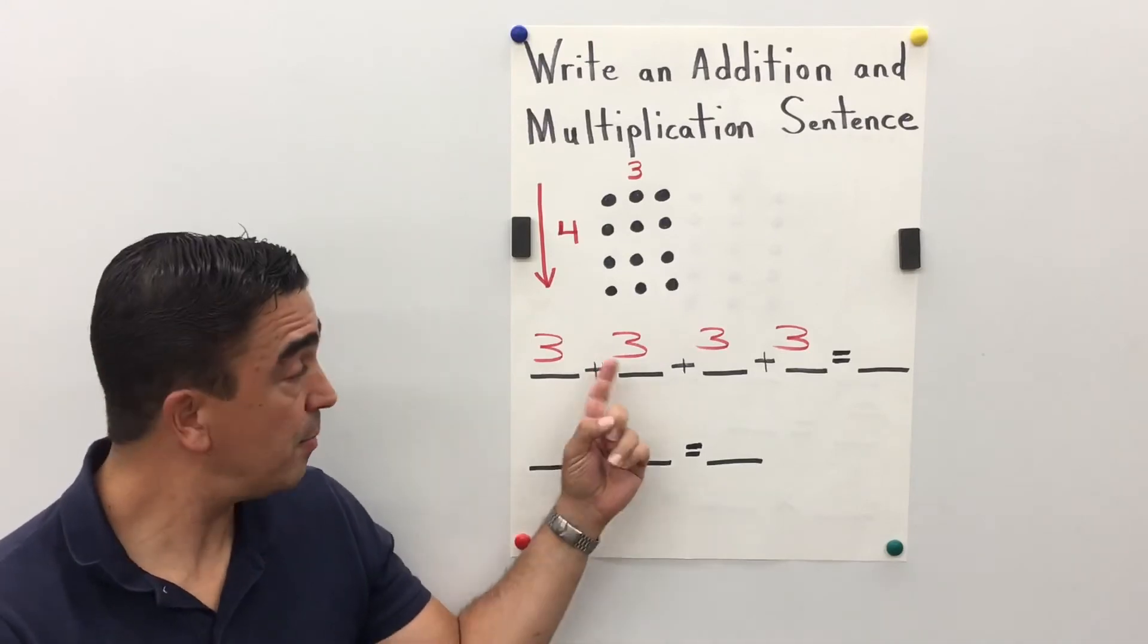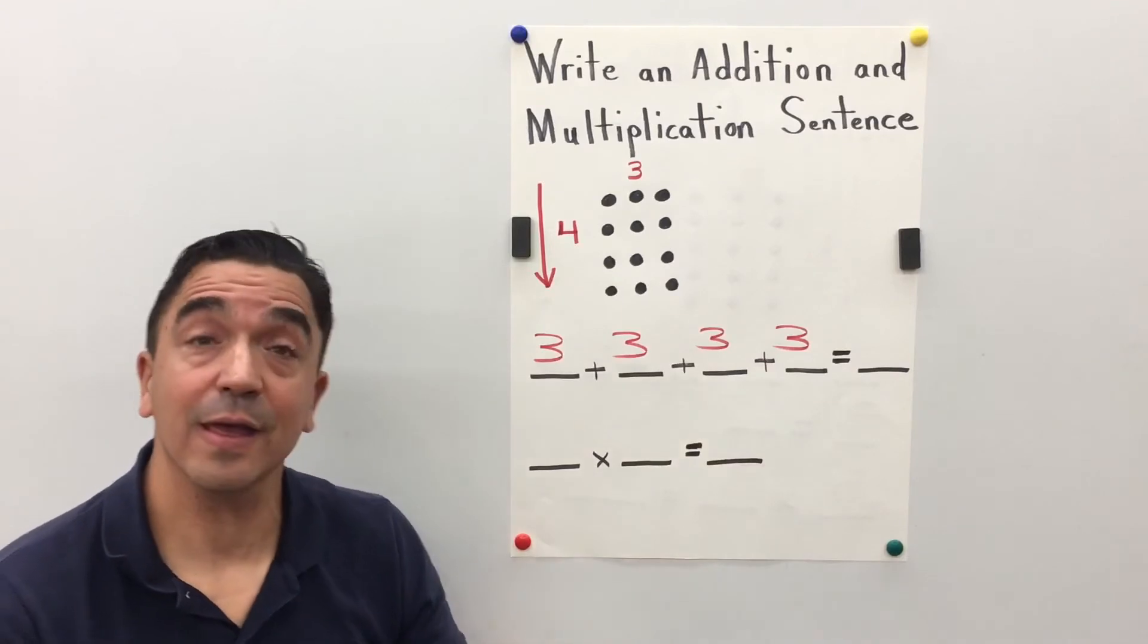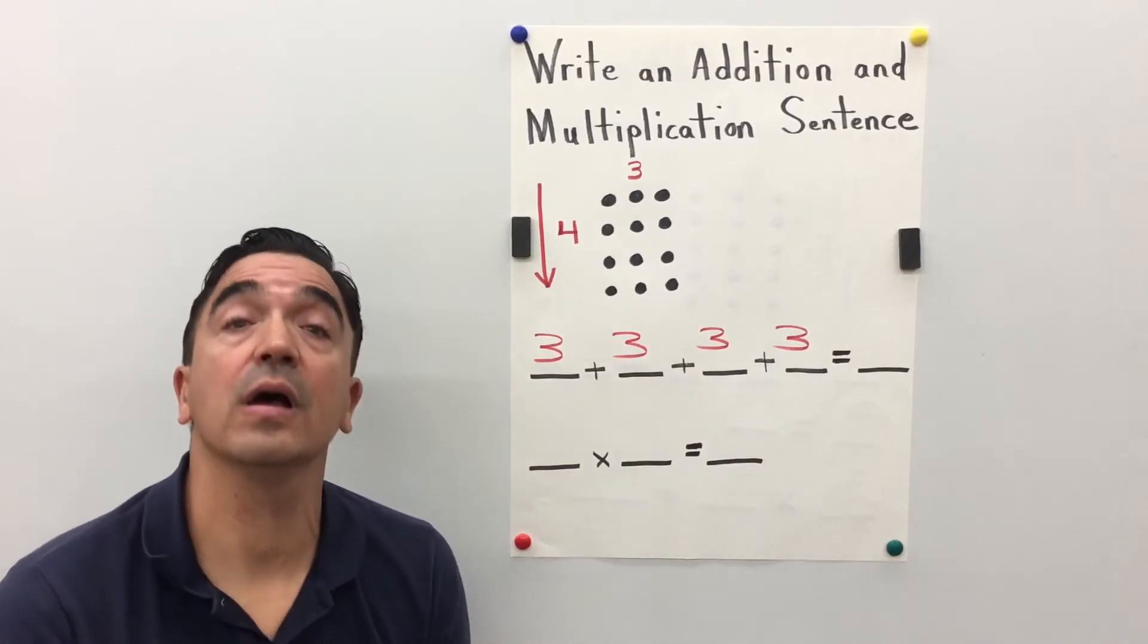Three plus three plus three plus three gives us a sum of twelve.